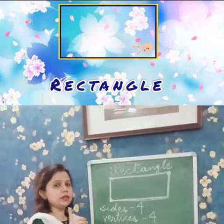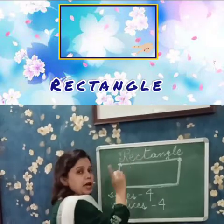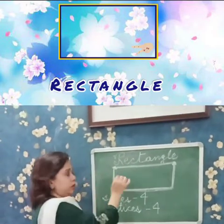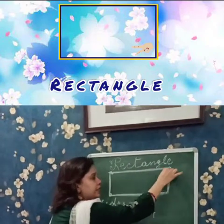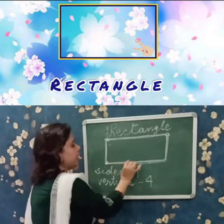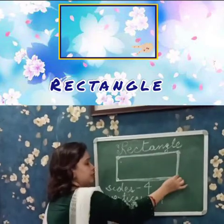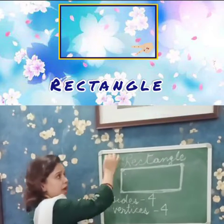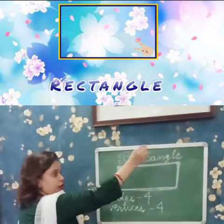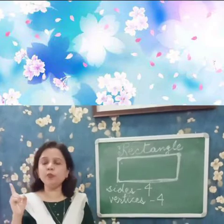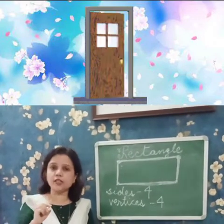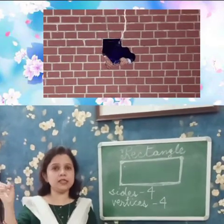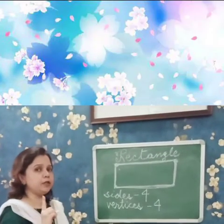So children, once again listen. A rectangle has four sides. Sides are the line segments with one common corner. This is one side, another side two, another side three, and another side four. Four sides and four corners. Can you give me some examples? Like this blackboard — it has four sides and four corners. The door in your room — the door has four sides and four corners. The wall in your room also has four sides and four corners. So these are the examples of rectangles.